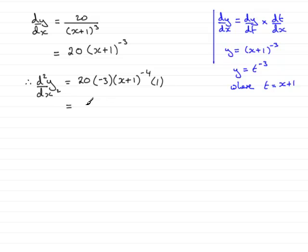So 20 times -3 is -60. And this is being multiplied by 1 over (x+1) to the power 4, which would combine with the 60 just to give me 60 over (x+1) to the power 4.